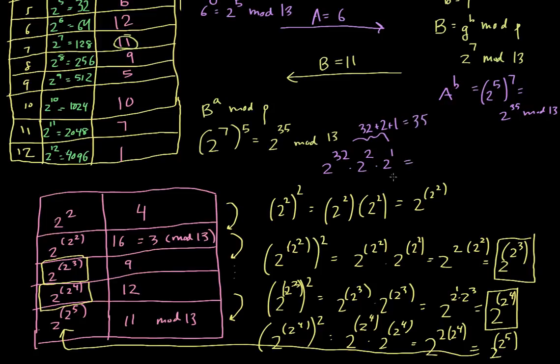So given that, what is 2 to the 32? Well, 2 to the 32, that's actually 2 to the 2 to the 5th, because 2 to the 5th is 32, times 2 squared times 2. And this is all mod p. And what's that equal to? So 2 to the 2 to the 5th, that's 11 mod 13. And so we multiply that by 2 squared, which is 4 mod 13. And you multiply that by 2.